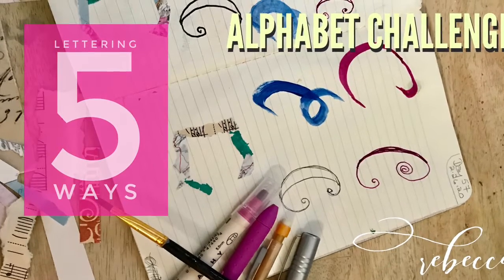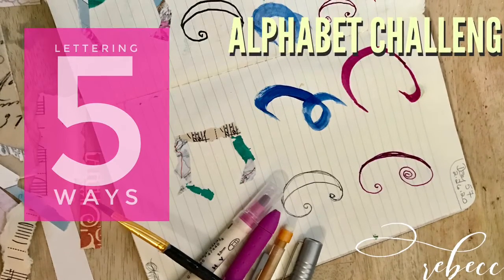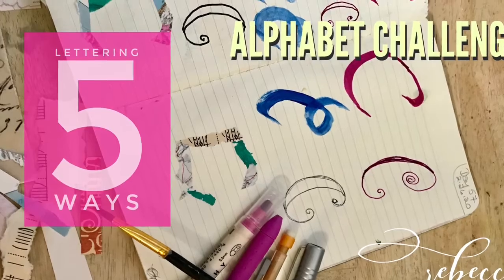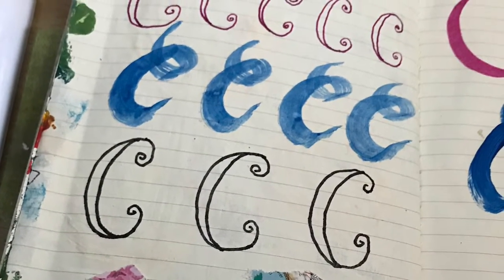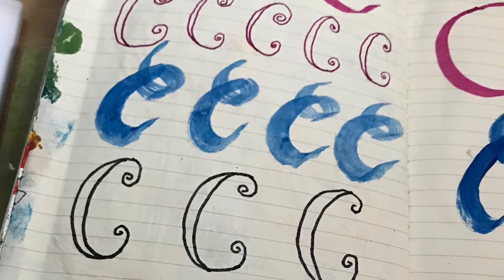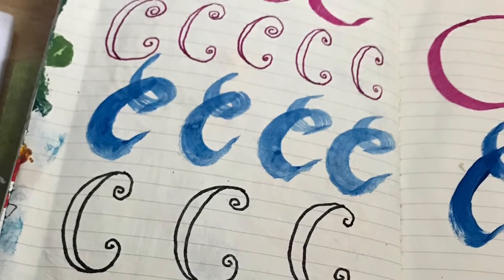Today is Wednesday, so we're going to be practicing our lettering. Today our letter is the letter C. That's for my daughter Casey, so I'm going to try to do this beautifully today.